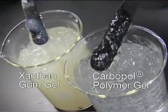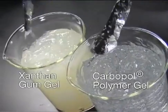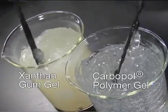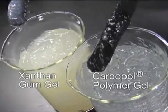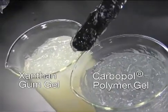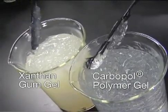A demonstration comparing an aqueous gel made with 0.6 weight percent Carbopol polymer and an aqueous gel made with 6 weight percent xanthan gum, another common suspending aid, illustrates the difference between viscosity and yield value.